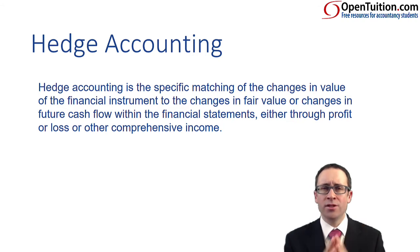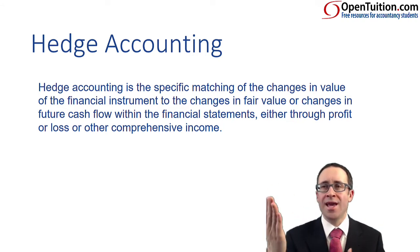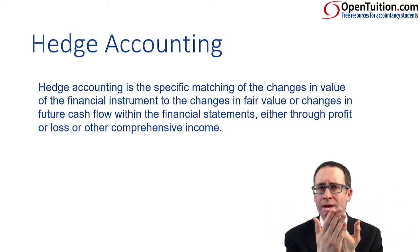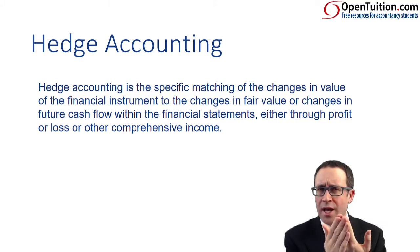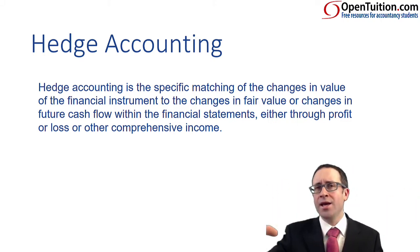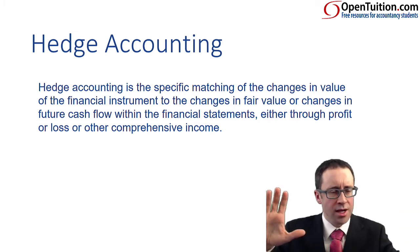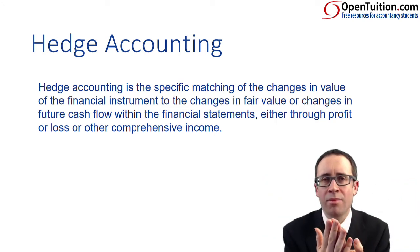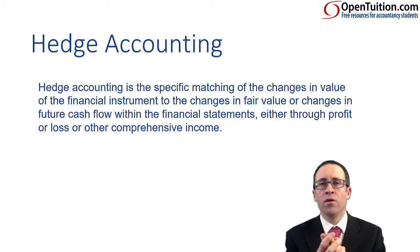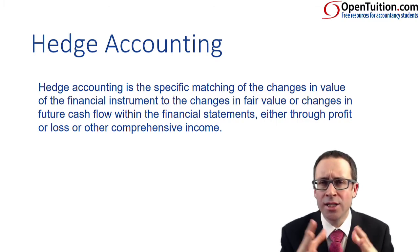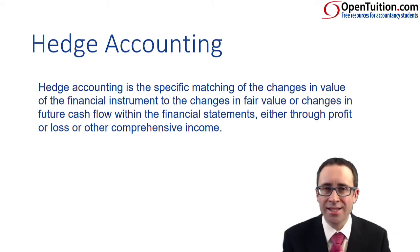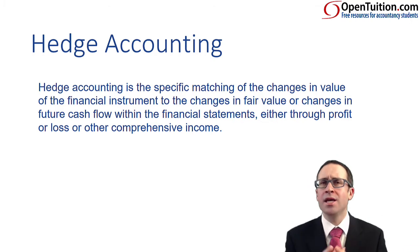Hedge accounting is the physical process of making sure that the gain and the loss are recognised in the same place, so that they do offset. We don't want them in different places — we don't want a gain in profit or loss and a loss in other comprehensive income because they're not offsetting each other. We want to offset them in the same place, either in profit or loss or in other comprehensive income. Hedge accounting ensures gains and losses are recognised in the same place and in the same period.